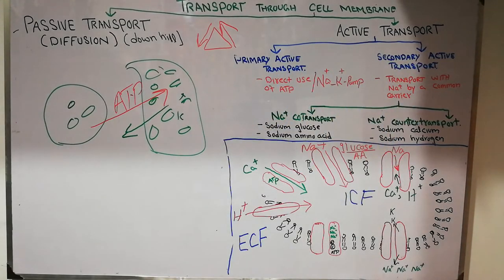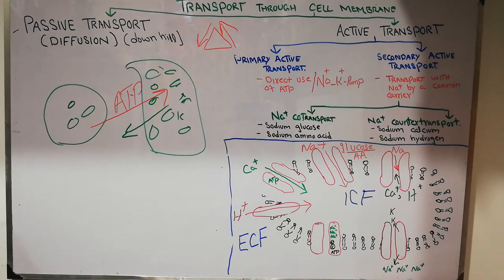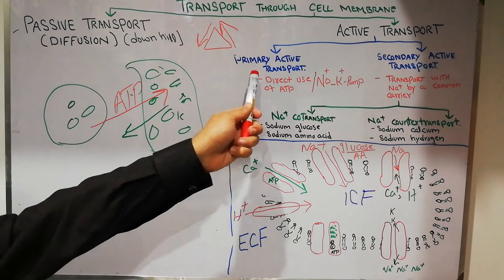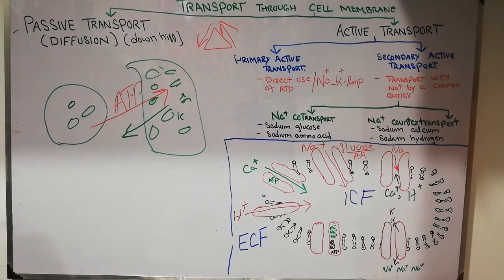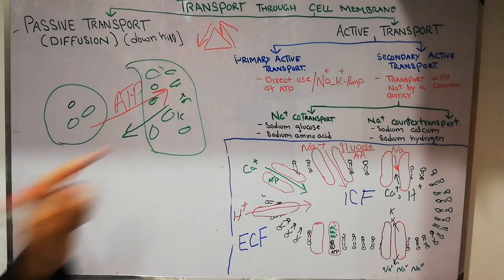In primary active transport there is direct use of energy. In secondary active transport, energy is used indirectly — most commonly the movement of sodium is utilized to move other substances like glucose, amino acids, calcium, and hydrogen. The most common and ideal example of primary active transport is the sodium-potassium pump.